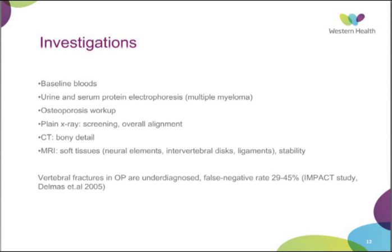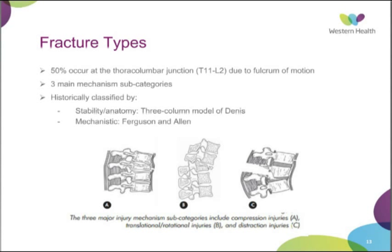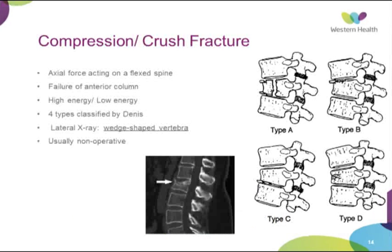Moving on to fracture types: 50% of thoracolumbar fractures occur at the thoracolumbar junction, at this transition point where there is freedom of motion. Historically, fractures have been divided into three main mechanism subcategories, and classification systems have looked at two different factors: stability and anatomy. The three subcategories are compression injuries — so your wedge crush and burst fractures — translational/rotational injuries, and distraction-type injuries.